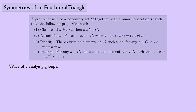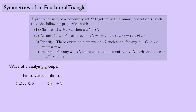We had some ways of classifying groups. We could classify groups as finite versus infinite. An example of a finite group would be the integers under addition mod n. And then infinite groups — we have something like the real numbers under addition or the complex numbers under multiplication. These are all examples of infinite groups.